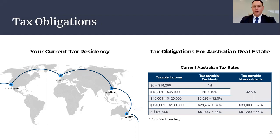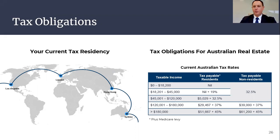If you are a non-tax resident of Australia, your Australian property income and capital gains will still be assessable. However, the tax rates applicable are the non-resident tax rates, starting at 32.5% and increasing to 45%. Generally, there are some strategies available to mitigate these tax implications.